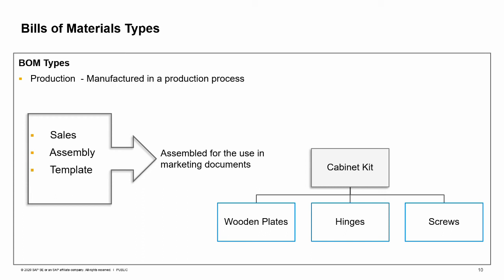The assembly BOM is similar to the sales BOM. It represents a collection of individual items in a set with a specific price. Unlike the sales bill of materials, only the finished product appears in the sales order document — the components do not appear as sub-items. For both the sales BOM and the assembly BOM, you do not manage the finished product as an inventory item, but instead as a sales item. The components can be sales items and inventory items at the same time.